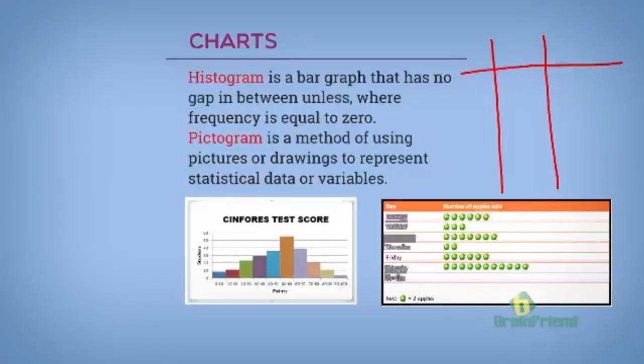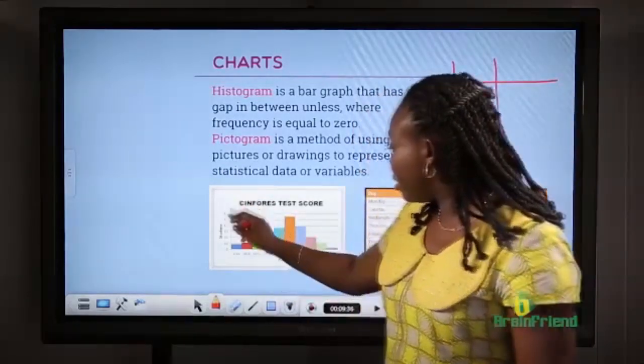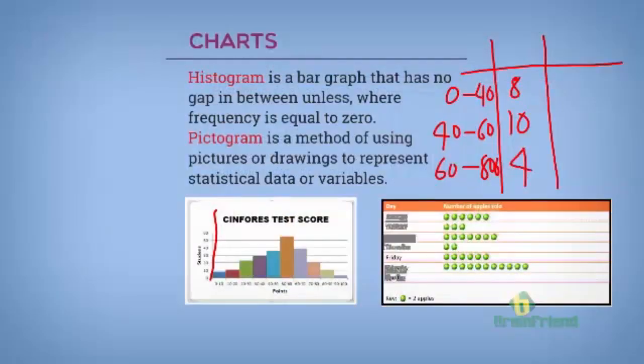I can easily say for 0 to 40, 8 students scored between 0 and 40. And for 40 to 60, 10 students scored about this. And for 60 to 80, 4 students scored this. This I can easily represent here using a histogram.